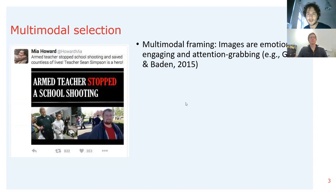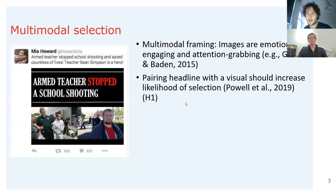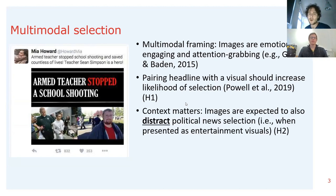So what do we know theoretically? From multimodal framing literature, we know that images are emotionally engaging and attention-grabbing. People are likely to be drawn to visual information, and visuals may motivate more attention and draw people into the news more than text. This is where our first hypothesis comes from: we expect that pairing a headline with a visual should motivate more selection than when such visuals are absent. However, we also believe that images drawing attention to specific news cues may distract from political news selection — so when visuals are presented alongside entertainment or sports news, they may motivate selection away from political news.